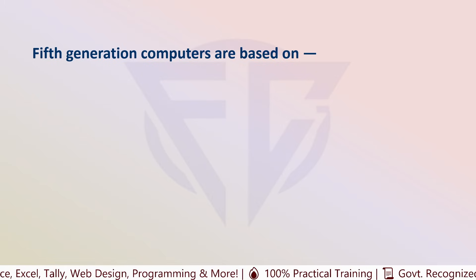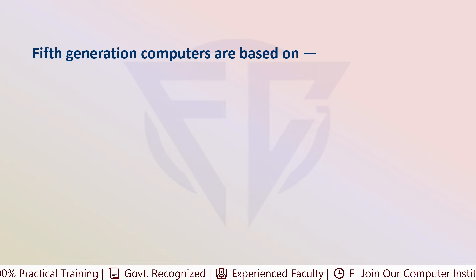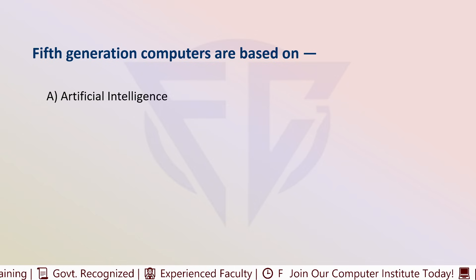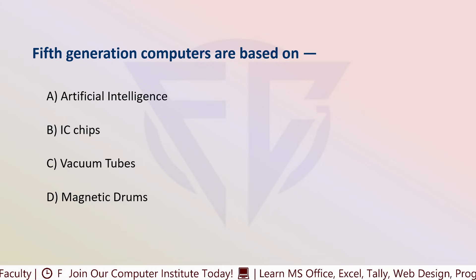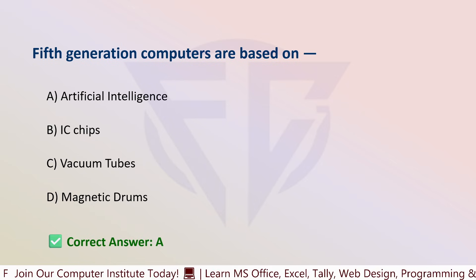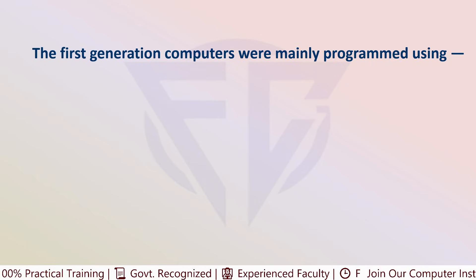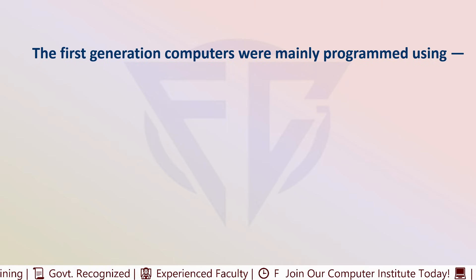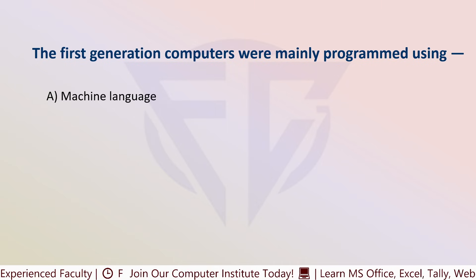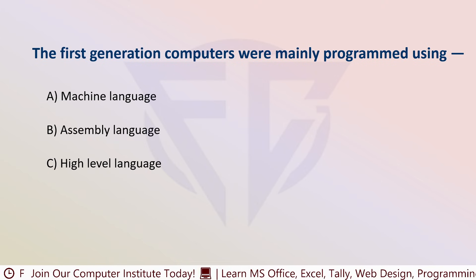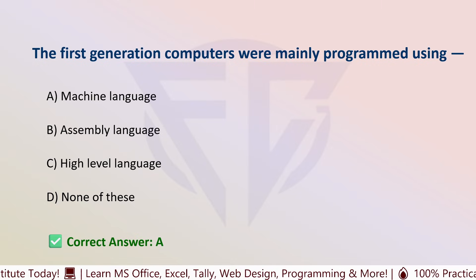The next question is: fifth generation computers are based on — options are: A) Artificial intelligence, B) IC chips, C) Vacuum tube, and D) Magnetic drums. The correct answer is A, that is artificial intelligence. The next question: the first generation computers were mainly programmed using — options are: A) Machine language, B) Assembly language, C) High level language, and D) None of these. The correct answer is A, that is machine language.